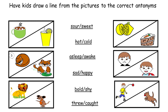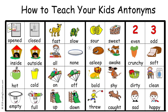Now have kids draw a line from the pictures to the correct antonyms. And this is a completed example. This is a great chart to print out for your kids to use as a resource. If you found this video helpful, please subscribe. And as always, I will leave a link in the description section to download all the teaching templates in this video.